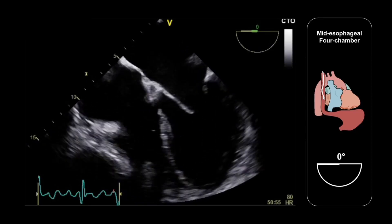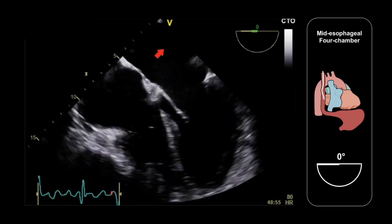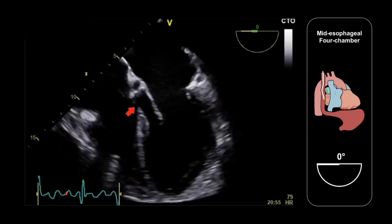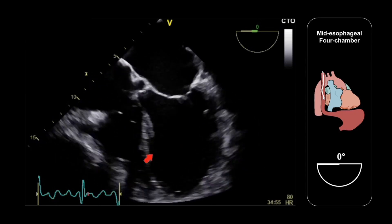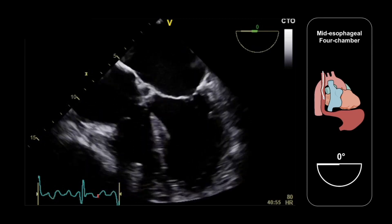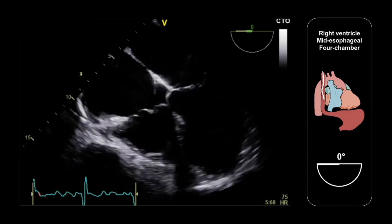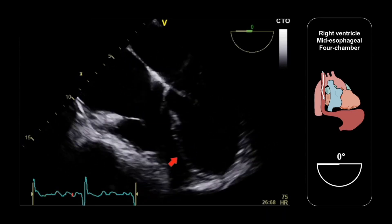To begin with, the mid-esophageal four-chamber view will look something like this. We have an imaging plane angle of zero degrees, and we are seeing the left atrium, mitral valve, and left ventricle, and then the right atrium, tricuspid valve, and right ventricle. Ideally, we would like to centre the right heart a little more towards the middle of the image sector. So what we do is turn the TEE probe towards the patient's right, and this sweeps across the heart and helps to centre the right heart in the middle of the sector. And so this is the view that we end up with.